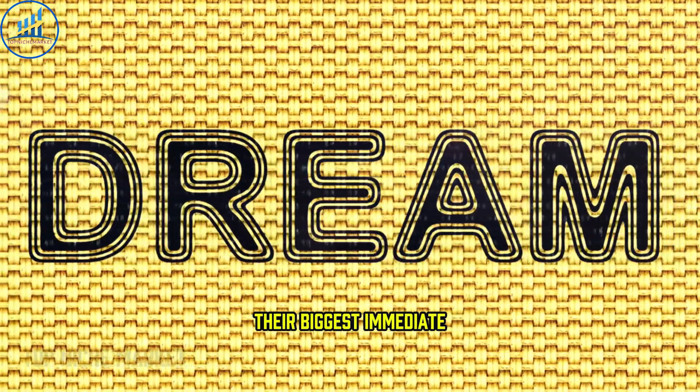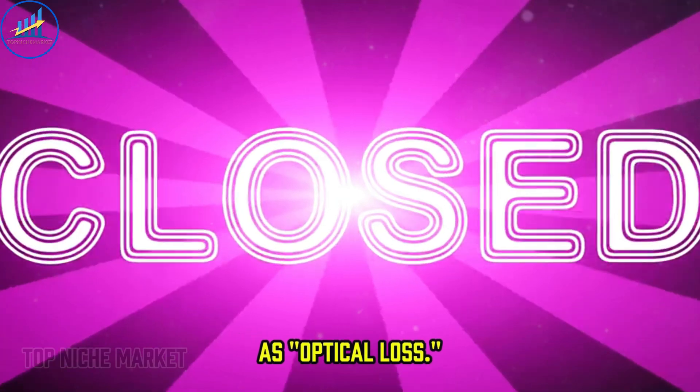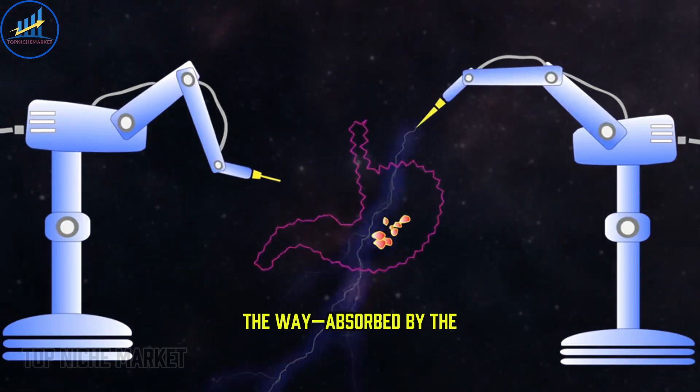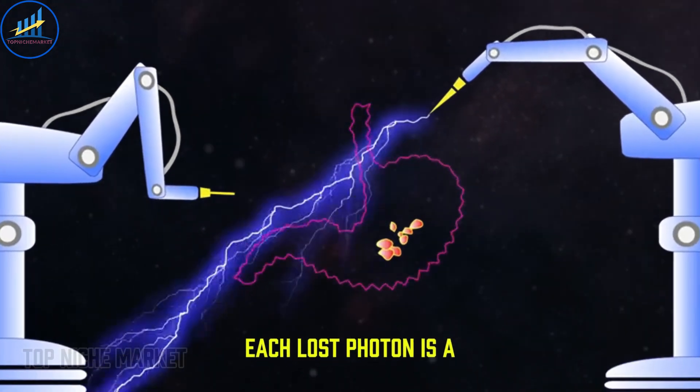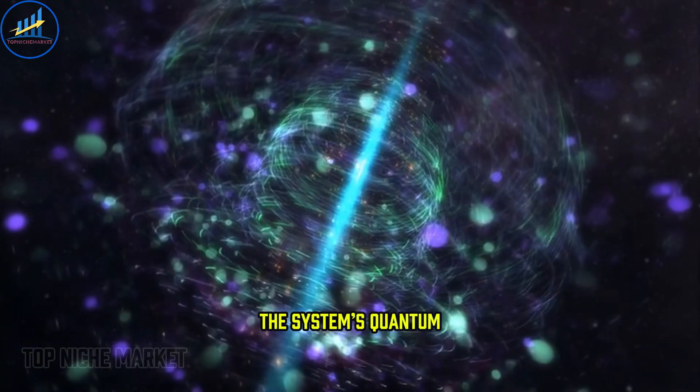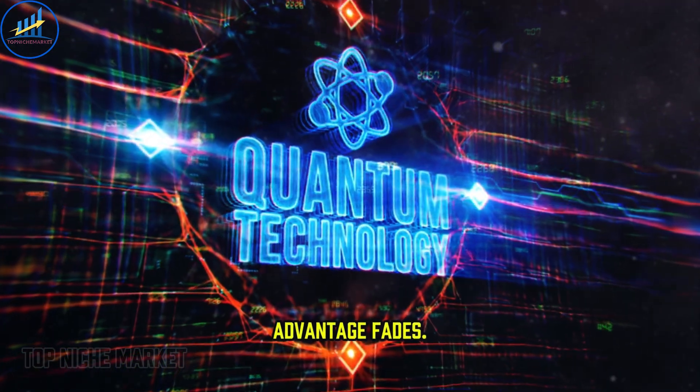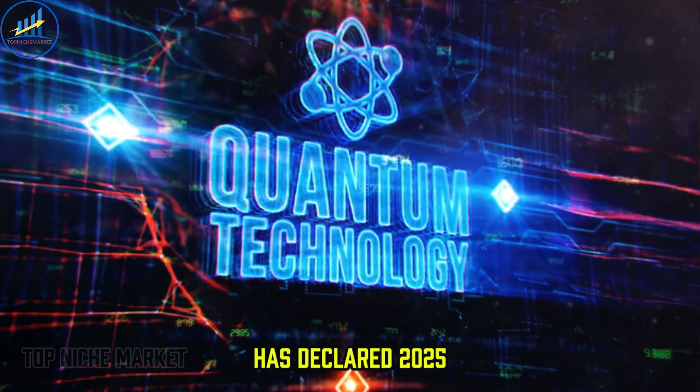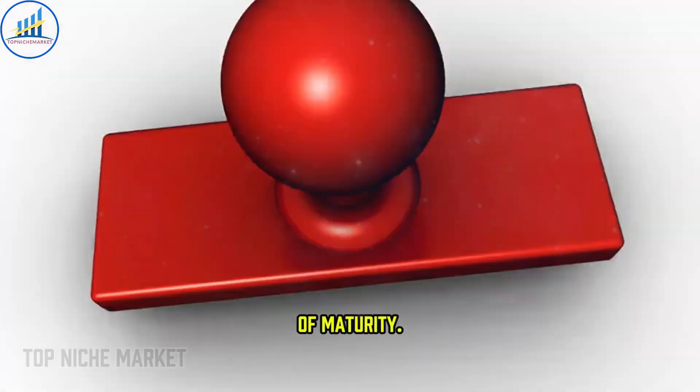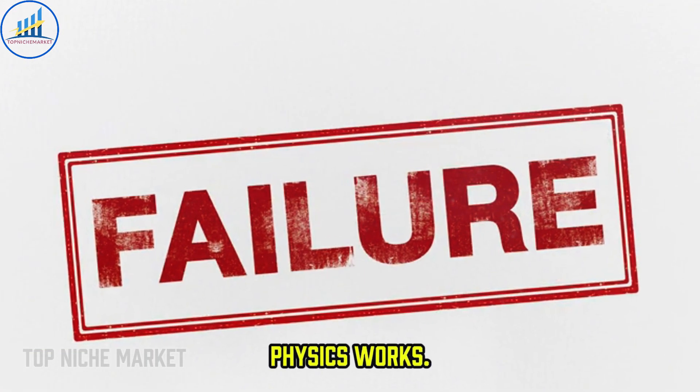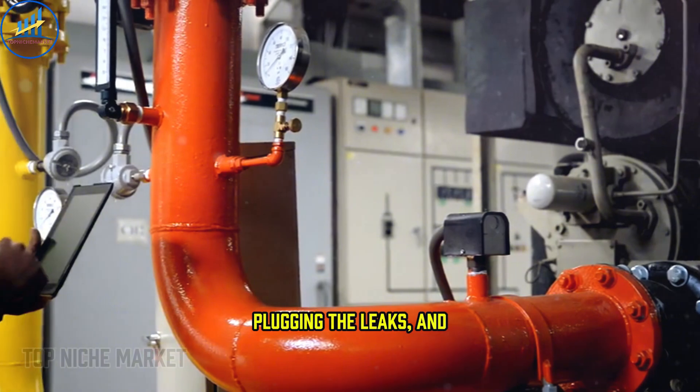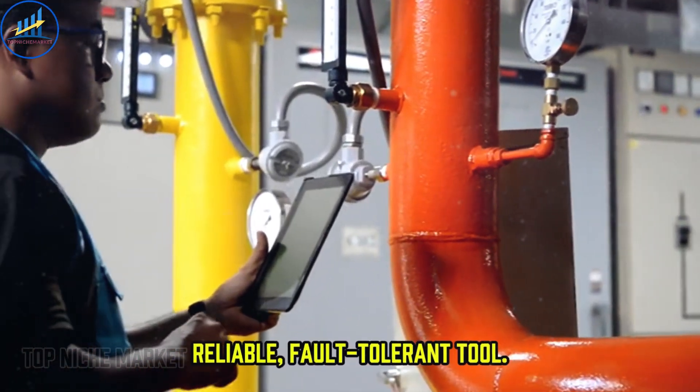Their biggest immediate challenge is what's known as optical loss. In any light-based system, some photons will inevitably get lost along the way - absorbed by the material of the chip or scattered away. Each lost photon is a tiny bit of lost quantum information. Too much loss and the system's quantum advantage fades. That's why Xanadu has declared 2025 the year of loss reduction. This isn't a sign of failure. It's a sign of maturity. They've proven the physics works. Now comes the hard engineering work of refining the system, plugging the leaks, and turning a record-breaking experiment into a reliable, fault-tolerant tool.